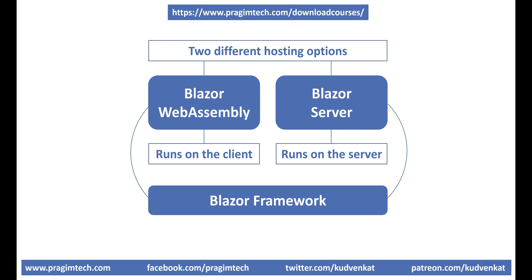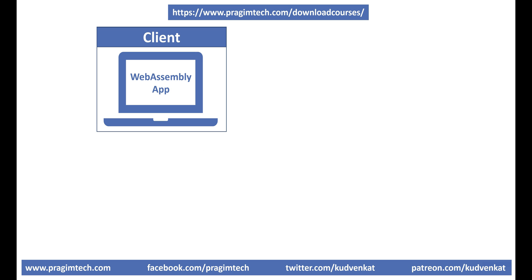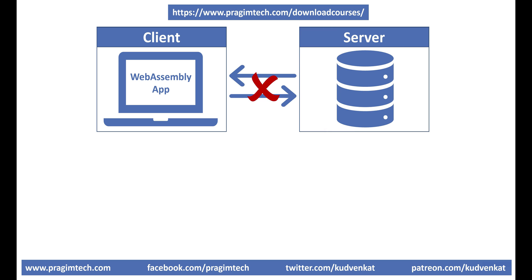We'll discuss the difference between the two hosting models in our upcoming videos. Now, depending on how we developed our Blazor WebAssembly app, it can either run entirely on the client in isolation without a connection to the server, or interact with the server only when server-side data is required. For example, an application like a calculator doesn't require any server-side data. After the app and its dependencies are downloaded onto the client browser, the connection with the server can be safely terminated and the app can function completely offline.